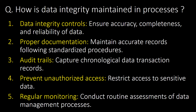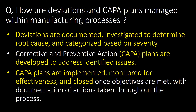How is data integrity maintained in processes? Data integrity is maintained by data integrity controls — ensuring accuracy, completeness, and reliability of data through proper documentation, maintaining accurate records, and following standardized procedures. It is also maintained by audit trails, capturing chronological data transaction records, by preventing unauthorized access to sensitive data, and by regular monitoring through routine assessments of data management processes.